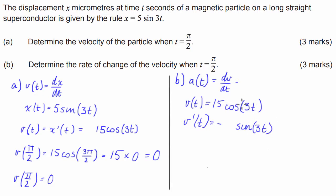So let's just write negative and then we've got sine of 3t. And then we multiply the front coefficient by the derivative of the inside, which is 3, so 3 times 15 is 45.